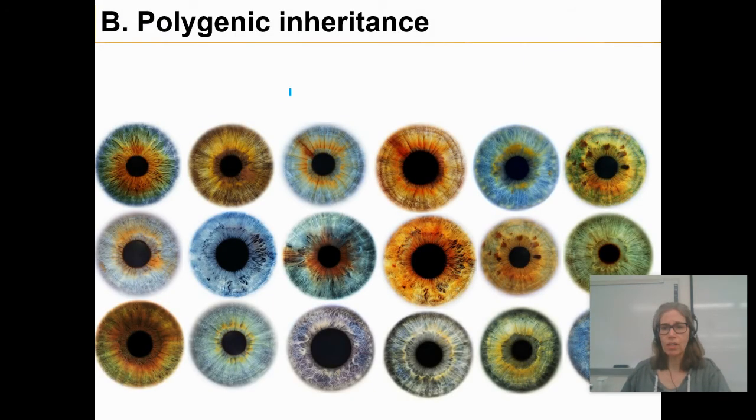Totally a different topic now. Polygenic inheritance is also a more complex interaction. Anytime you see a trait that has lots and lots of variation, it's probably polygenic. For example, eye color. There's blue eyes and green eyes and brown eyes and gray eyes.